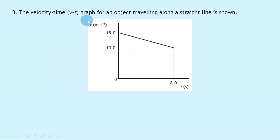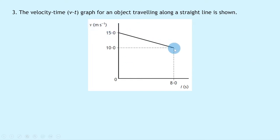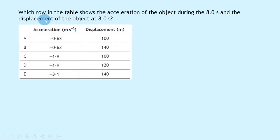Question 3 says the velocity-time graph for an object traveling along a straight line is shown. It starts at a velocity of 15 m/s and decreases to 10 m/s over 8 seconds. Which row in the table shows the acceleration of the object during the 8 seconds and the displacement of the object at 8 seconds?